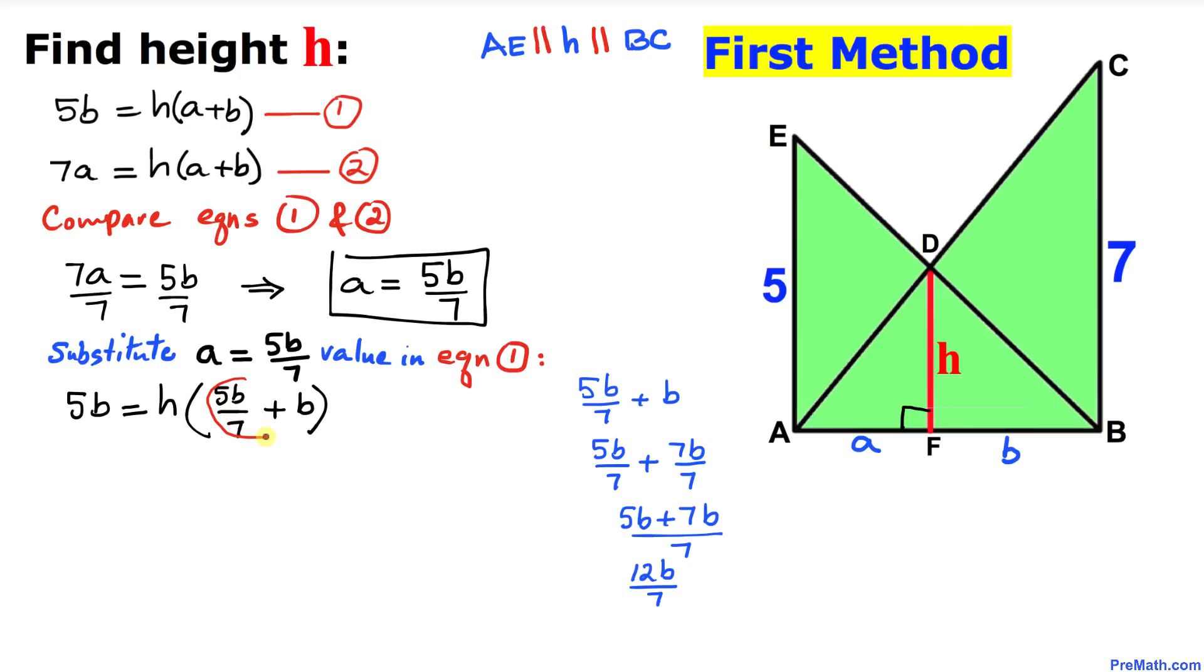Focus on inside this parentheses. I've copied it down and simplified it. Making the common denominator 7, our simplified answer turns out to be 12B over 7.